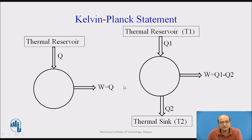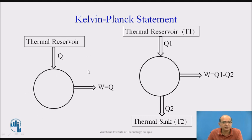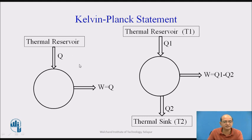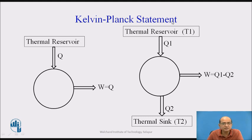This is rather what we can call a PMM2 — a perpetual motion machine of the second kind — which is impossible to construct, because all the heat is being converted into useful work, meaning 100% efficiency. This is what the Kelvin Planck Statement addresses — such an engine is impossible to construct.